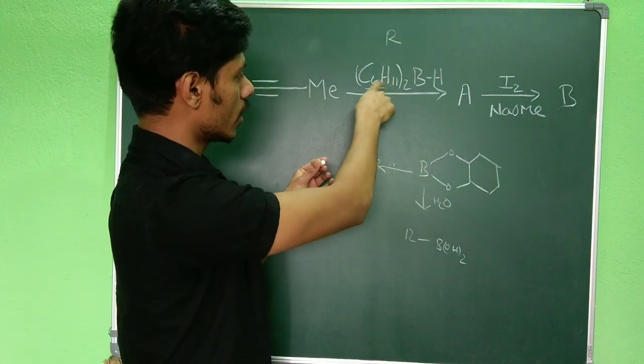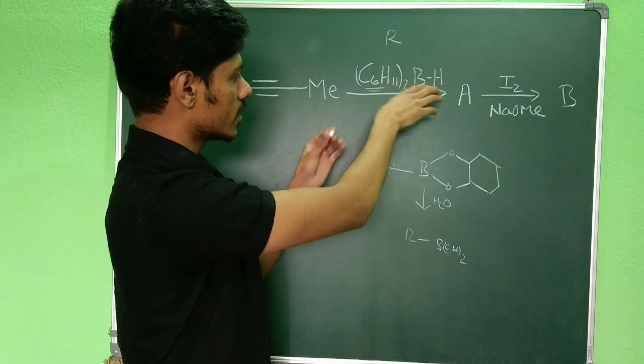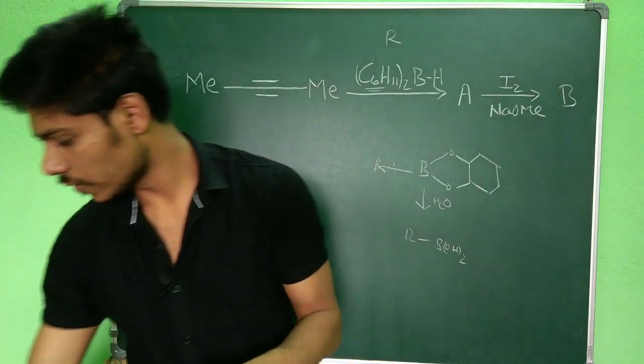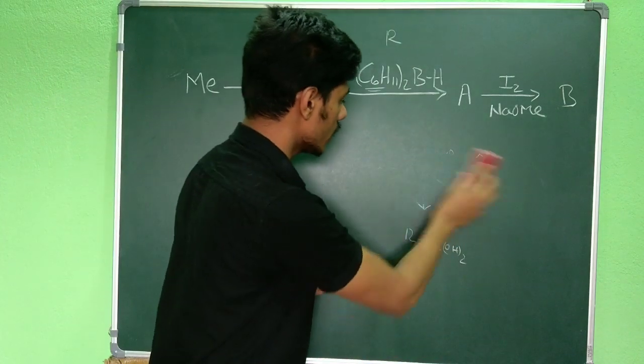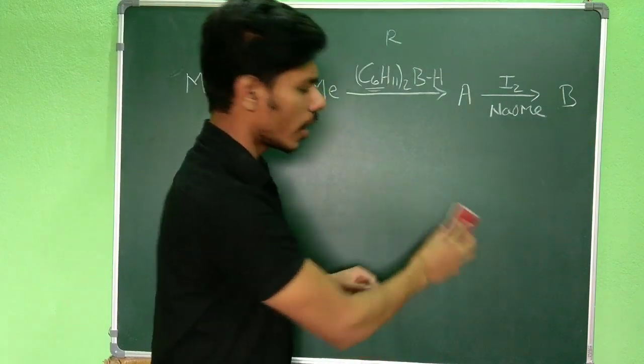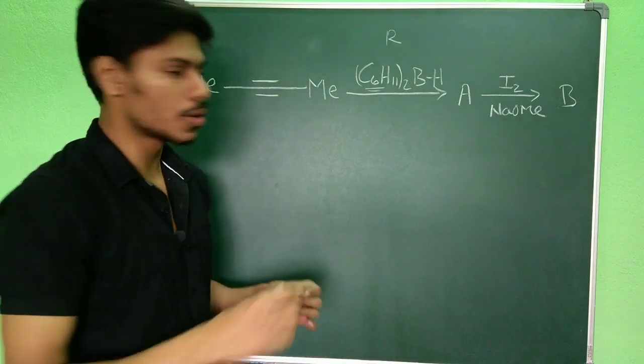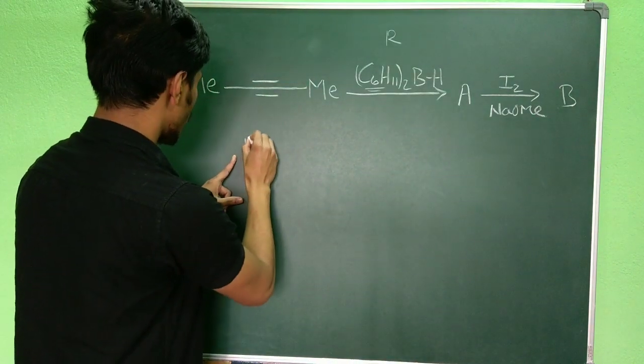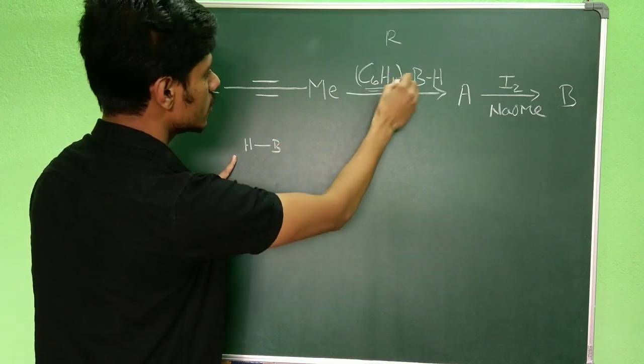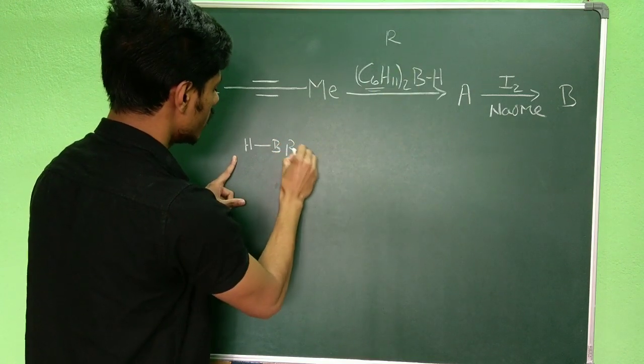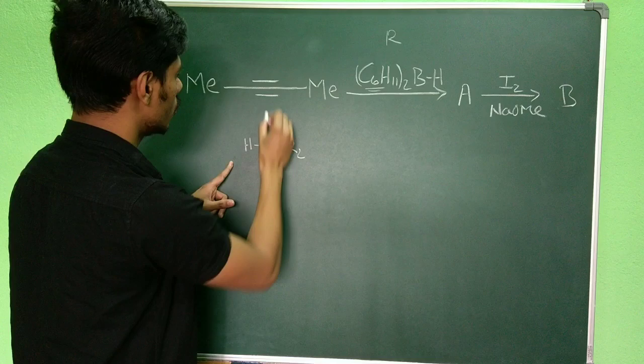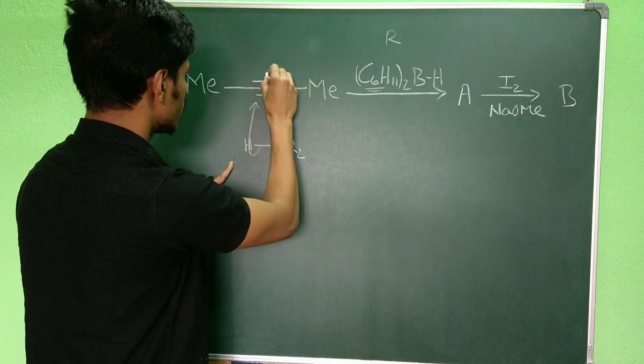In this case it is oxygen which is linked to the boron, but here it is the direct C-B bond. So this is the first difference. Nonetheless, step one is very much similar and it is the hydroboration reaction.